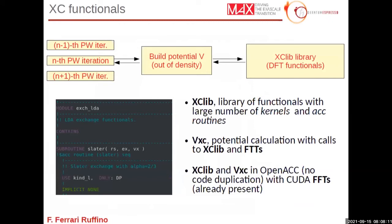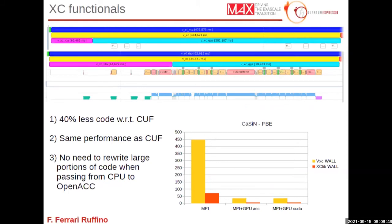Another thing done during the hackathon was the exchange correlation functional module. This module has one big loop with many iterations, and for each iteration a very small subroutine needs to be executed on the device. In this case, using the routine directive was helpful. Fabrizio Ferrari finalized this work during the hackathon and estimated that using OpenACC allowed writing 40% less code compared to doing the same job with CUDA Fortran, with no performance loss — same performance but much less code.